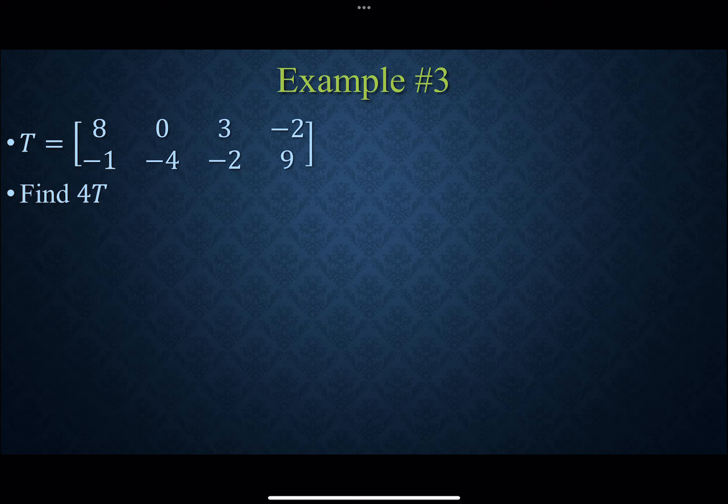So here, if we define this as matrix T, well, we've got 2 rows and 4 columns, so our 2 by 4 matrix. If we want to find 4T, you're just going to multiply each of those numbers by 4.